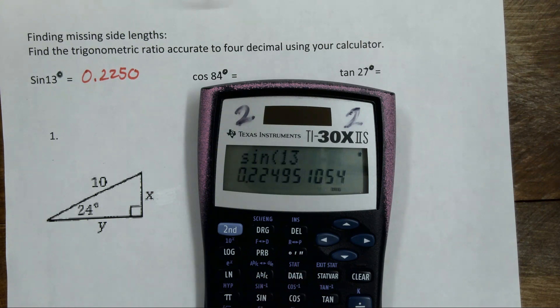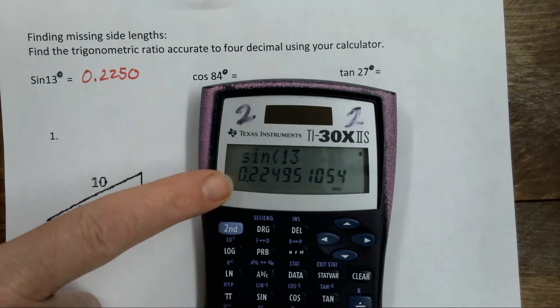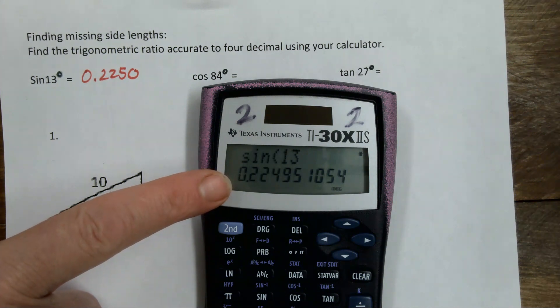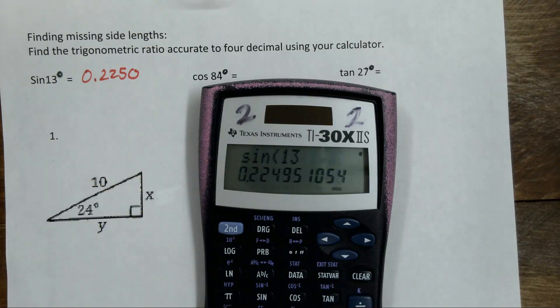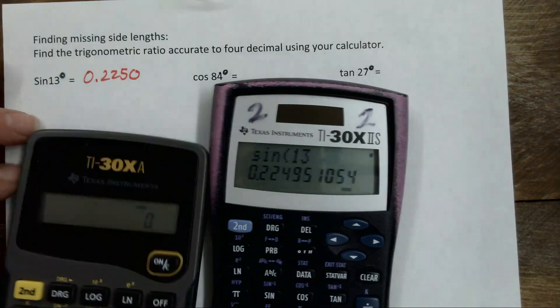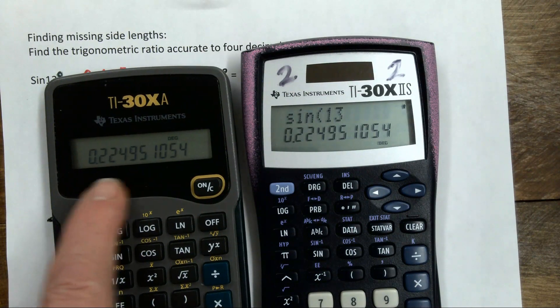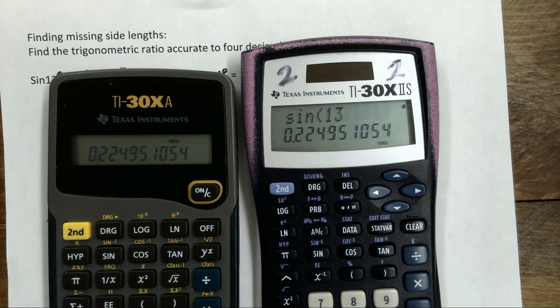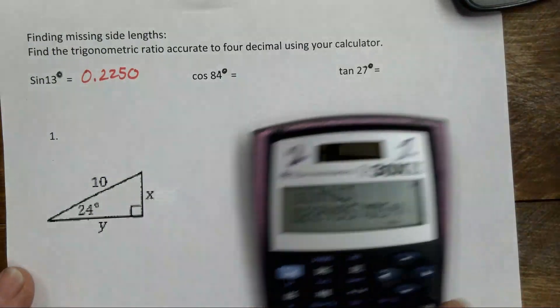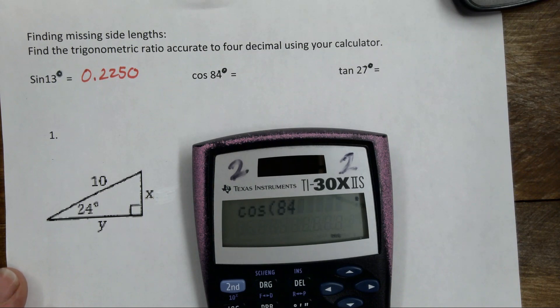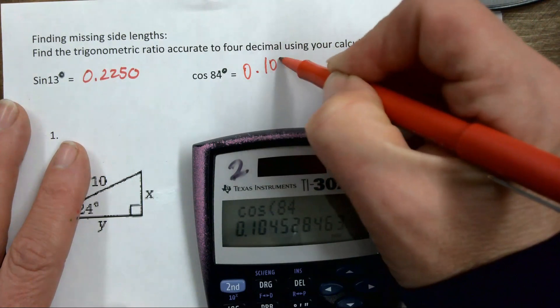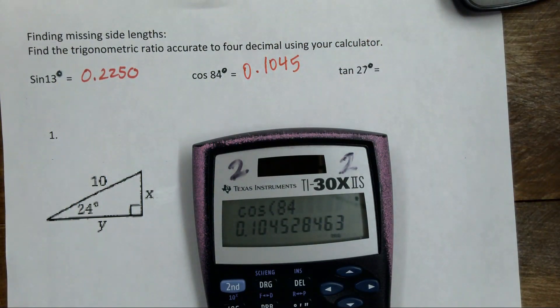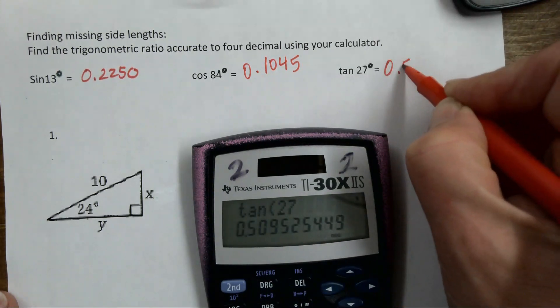Now if you couldn't put it in this order, if you hit sine 13 and your calculator came up with something different than this, then there are two things that could happen. Either A, you're not in degrees or B, you need to enter it opposite in your calculator. Meaning, you would have to, and that's how my calculator is that I typically use. I have to put the angle in first and then hit the sine and then it'll give me my thing. So make sure you know which calculator you have. Did we all figure it out? Let's do the cosine of 84. Cosine 84 equals, that is 0.1045. Tangent 27, 0.5095.